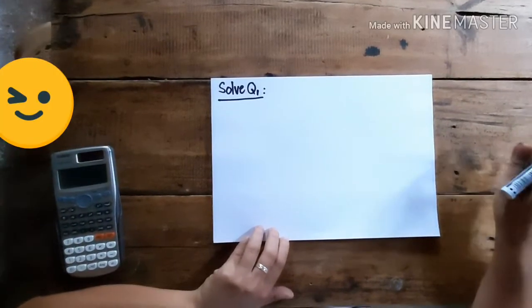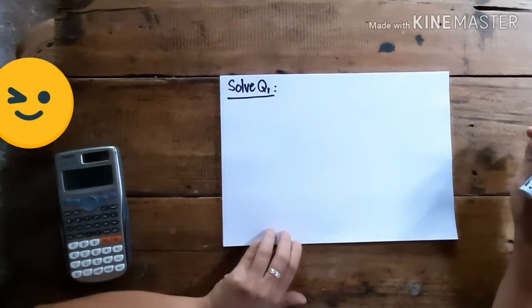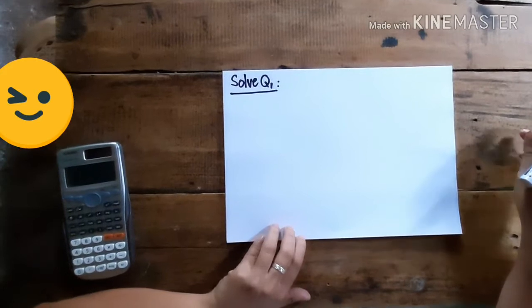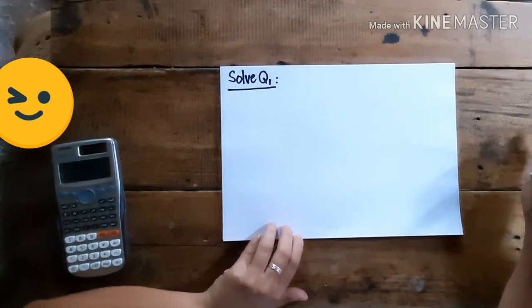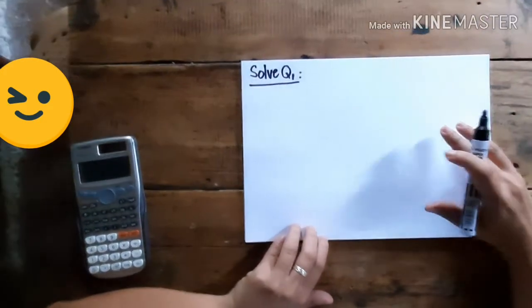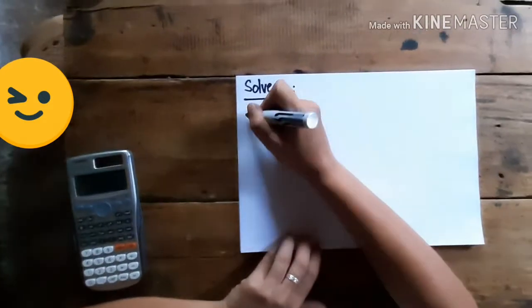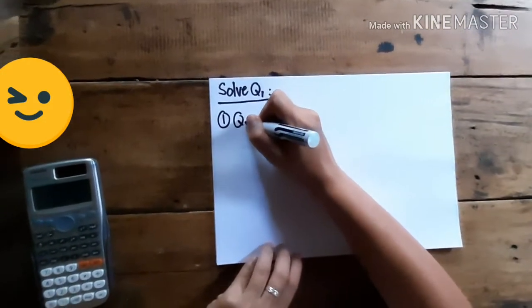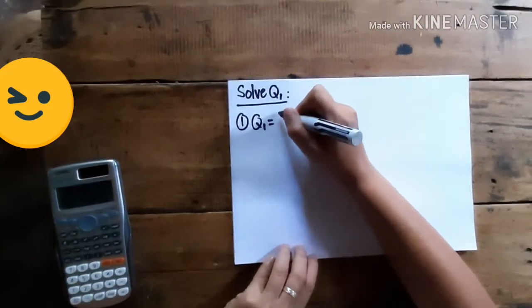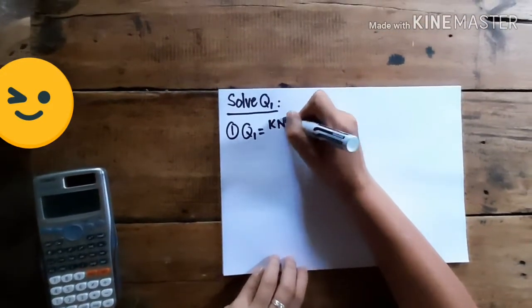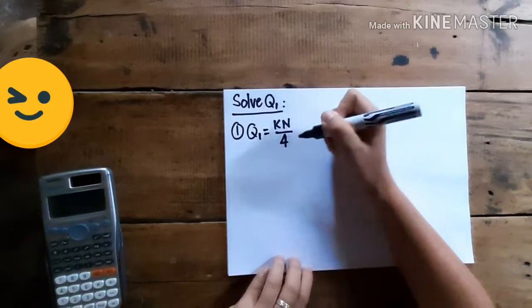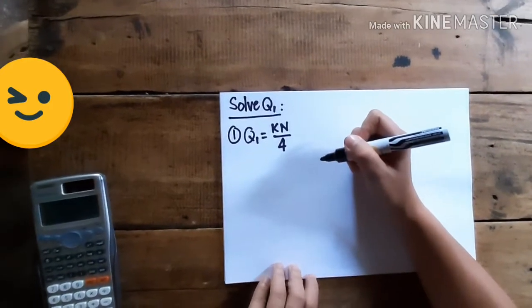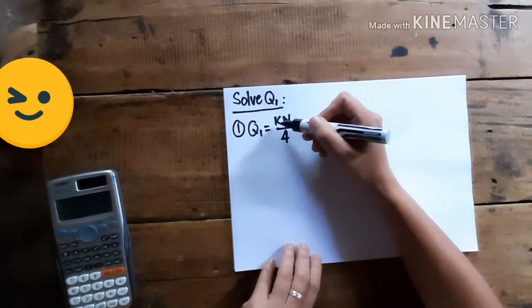Okay, the first thing to solve is quartile 1. The first step is to locate which class interval quartile 1 belongs to. So, using this formula for Q1, that would be K times N divided by 4, divided by 4 because we're solving for quartile.